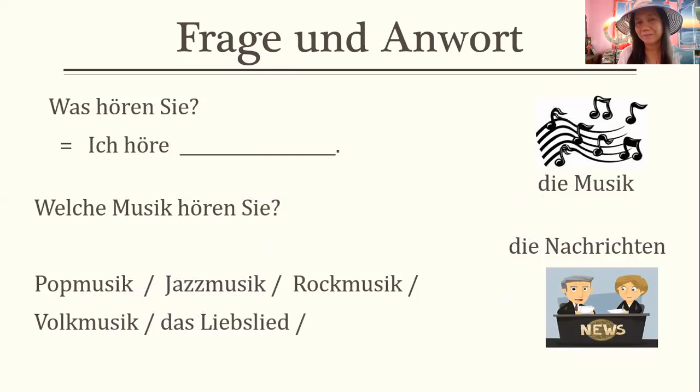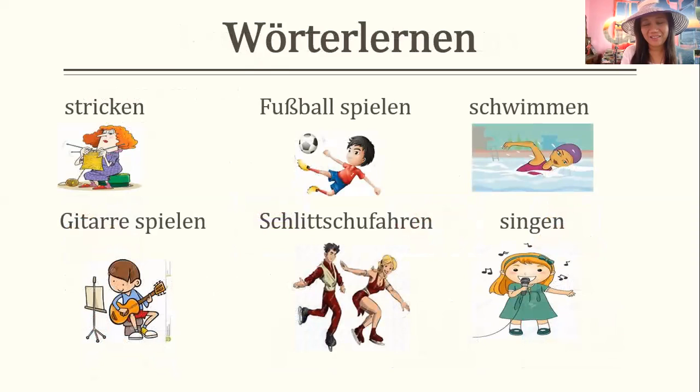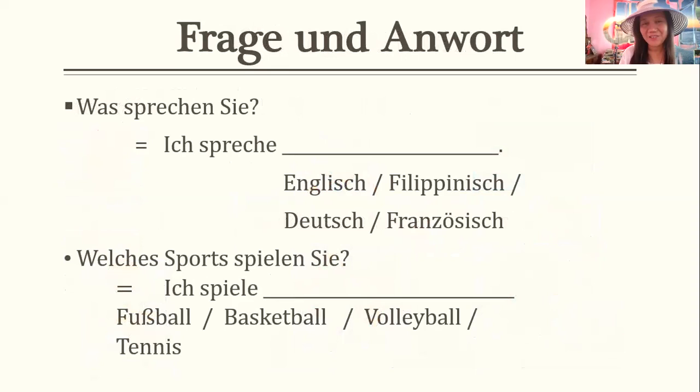With lernen — for skills you don't say studieren, but lernen. For example: Kochen — cooking, Autofahren — driving, Tanzen — dancing, Nähen — sewing, Klavierspielen — playing piano, Zeichnen — drawing, Backen — baking, Malen — painting, Stricken, Fußball spielen, Schwimmen, Gitarre spielen, Schlittschuhlaufen — ice skating, und Singen.